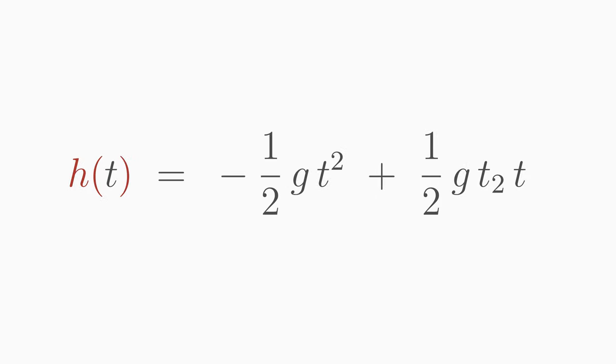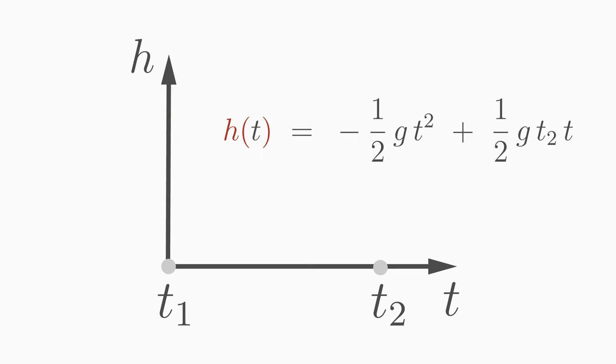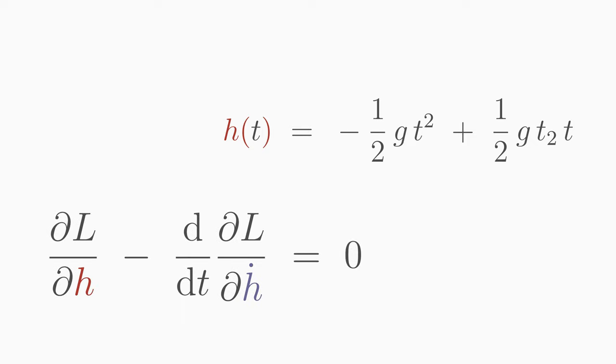If you plot the result in the position versus time diagram, you get a parabola. Thus the Euler-Lagrange equation yields exactly the curve we expected.